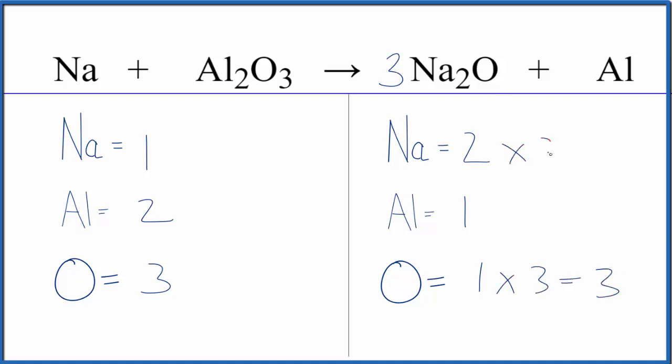Two times three, that would give us six sodium atoms. But again, that's easy to fix. If we put a coefficient of six here, it only affects the sodium. So one times six, that balances the sodiums.